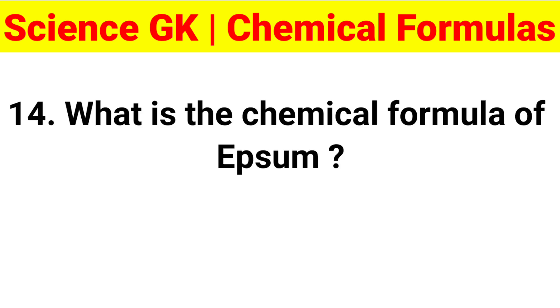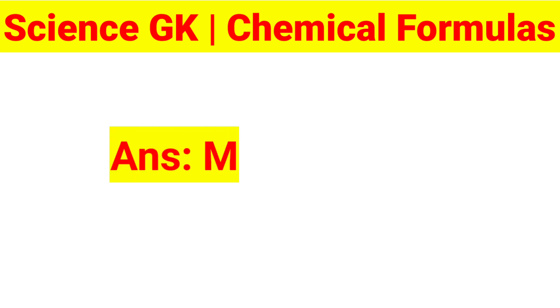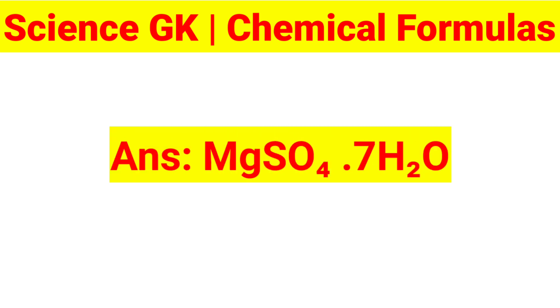Question 14: What is the chemical formula of Epsom salt? Answer: MgSO4·7H2O.